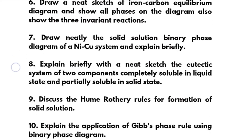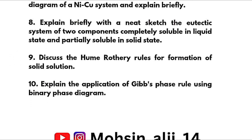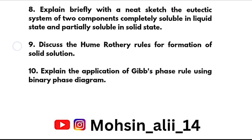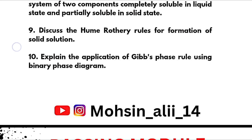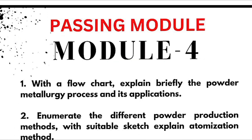Next: draw neatly the solid solution binary phase diagram of the nickel-copper system. Eighth: explain briefly with a neat sketch the eutectic system of two components completely soluble in liquid state and partially soluble in solid state. Ninth: discuss the Hume-Rothery Rules for formation of solid solutions. Tenth: explain the application of Gibbs Phase Rule using a binary phase diagram. These are the 10 questions to cover from Module 2.